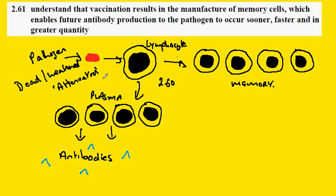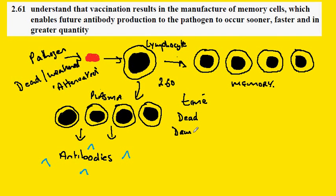Now the reason why we have to vaccinate is that the natural process of meeting the pathogen and producing the plasma cells and the memory cells takes time. And during that time, the organism may be killed or suffer very severe damage. By presenting the attenuated pathogen, it can't do these things, but it still produces memory cells and antibodies.